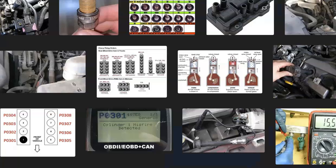That's a basic overview of how you go about diagnosing and fixing a Chevrolet or GMC with the P0301 code. If you have anything to add, comment below. If you have questions, ask and I'll try to answer them. If this video helped you, please click like and subscribe.